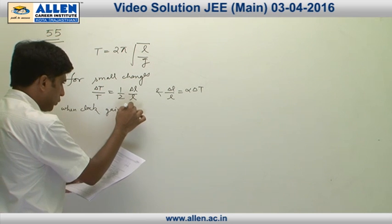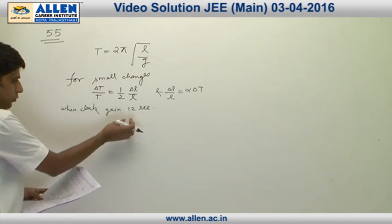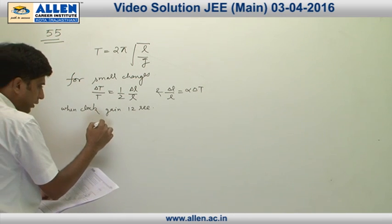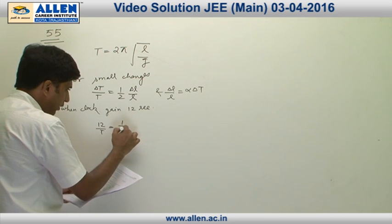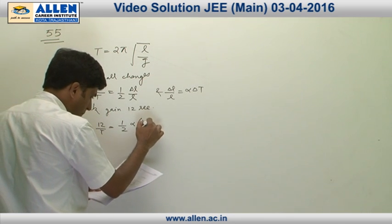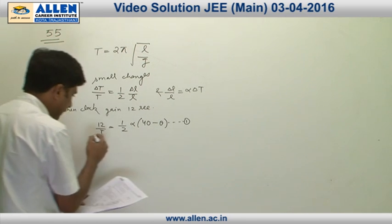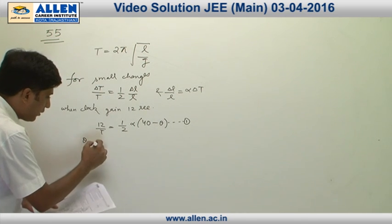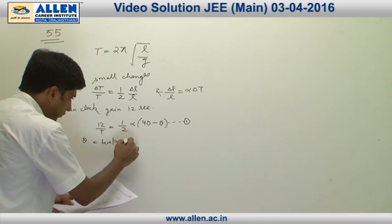When clock gains 12 seconds, we put the value 12 seconds at the place of ΔT. We get 12/T equals to half α(40 - θ), equation number 1, where θ is the temperature at which clock will show correct time.